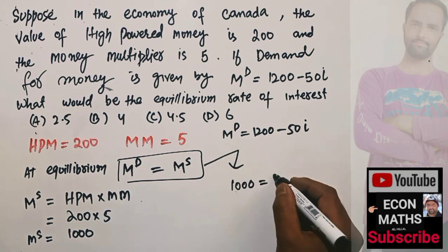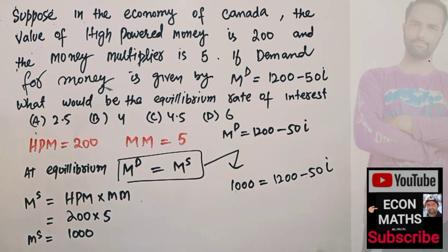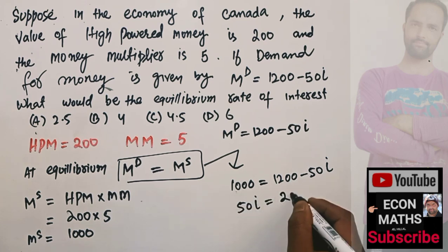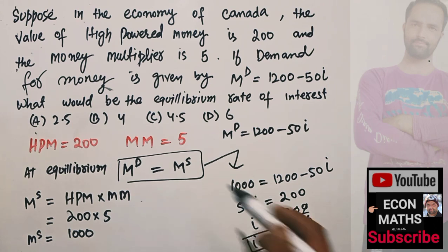Money demand is given by Md = 1200 - 50i. At equilibrium, Md = Ms = 1000, so 1200 - 50i = 1000. Transposing, 50i = 1200 - 1000 = 200. Therefore, equilibrium interest rate i = 200/50 = 4.